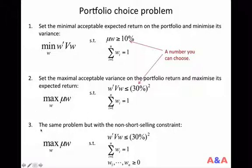The third problem looks pretty much like the second problem. You are choosing weights to maximize the expected return of the portfolio, setting the maximal acceptable variance of your portfolio. But it has one more constraint, which says all the weights should be non-negative.